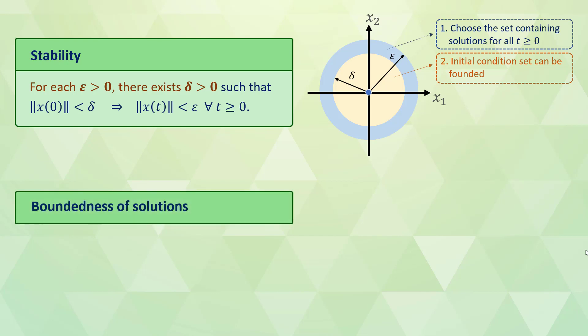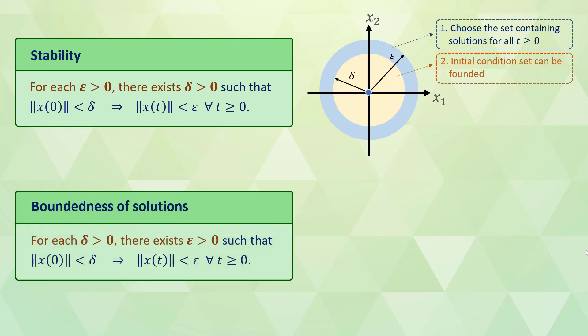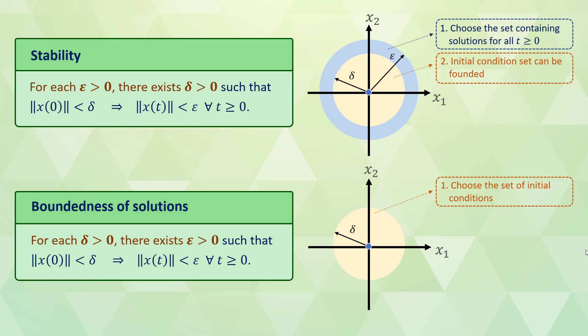For the boundedness of solutions, the definition is slightly different. We say a system has bounded solutions if for each set of initial conditions around the equilibrium, there exists a bounded set that contains the solutions for all time. Unlike the stability definition, we choose the set of initial conditions, and then the bounded set containing the solutions for all time can be found.